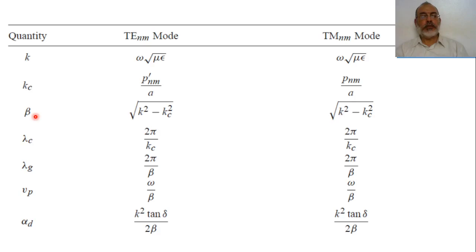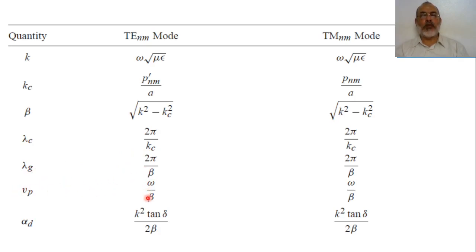Beta, the propagation wavenumber, equals the square root of K squared minus Kc squared, which is the same for both TE and TM modes. The cutoff wavelength equals 2π over Kc. The guided wavelength is 2π over beta. The phase velocity is omega over beta. The attenuation coefficient due to dielectric loss is K squared tan delta over 2 beta.